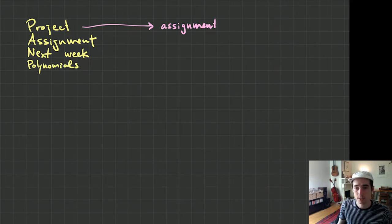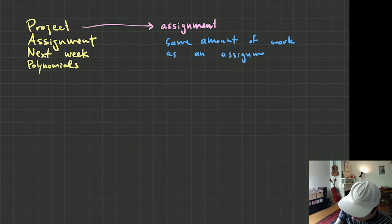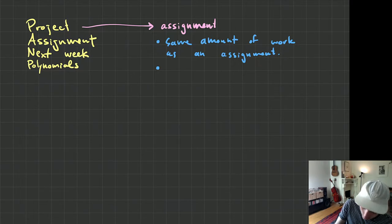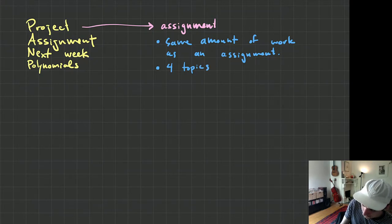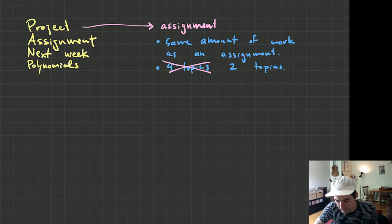The project is now an assignment and that means it should be about the same amount of work as an assignment. The way we're going to do that is I'm going to narrow it down. It started off as four topics — it is no longer four topics. It is now two topics. Choose any two topics from our course and talk about how they are related.